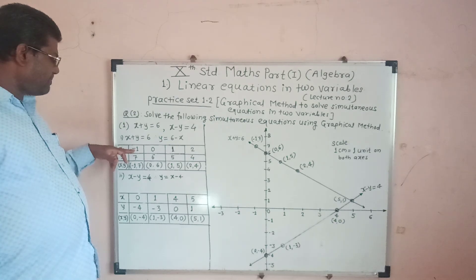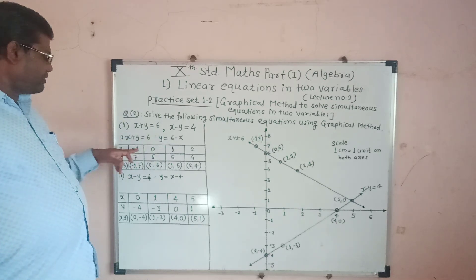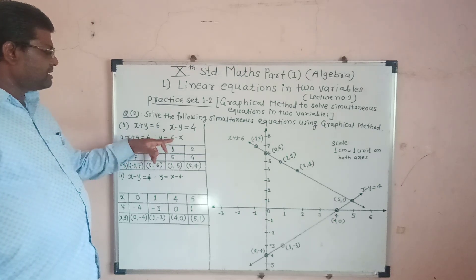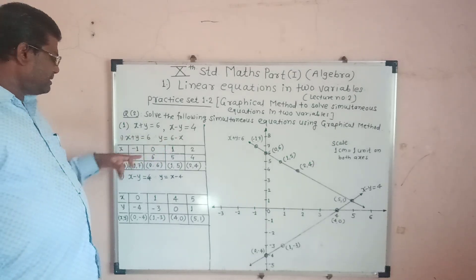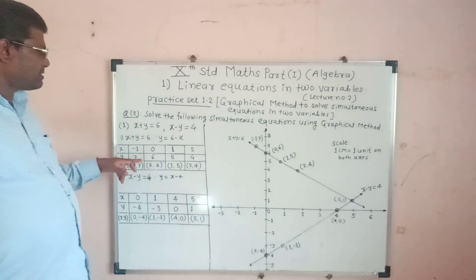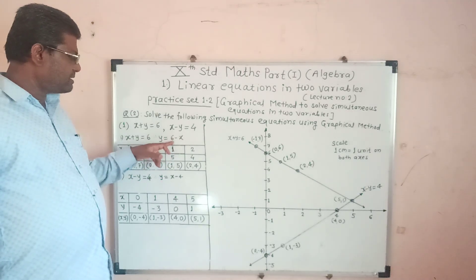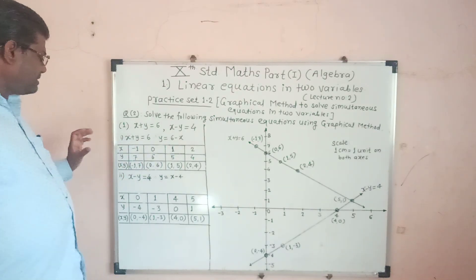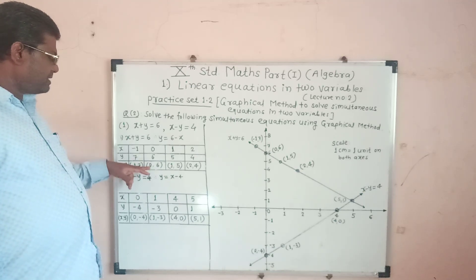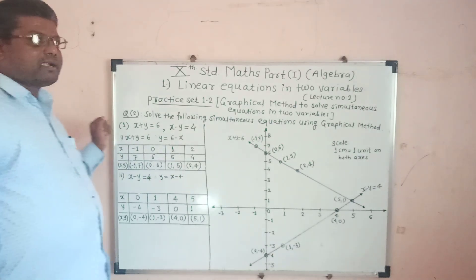We choose suitable values of x as minus 1, 0, 1, and 2, and find the values of y. When x equals minus 1, y equals 7. When x equals 0, y equals 6. When x equals 1, y equals 5. When x equals 2, y equals 4. We got ordered pairs: (−1, 7), (0, 6), (1, 5), and (2, 4). Find at least 4 ordered pairs.